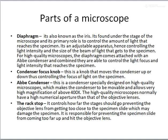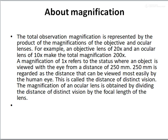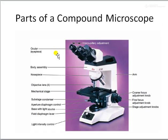Now, regarding magnification in a compound microscope — the total magnification is the combined magnification of the different lenses. For example, if you have an objective lens of 20x and an ocular lens of 10x, then the total magnification becomes 200x. I hope you now have a good idea about the parts of the microscope. In the next session, we will be continuing with the types of microscopy. Thank you for now.